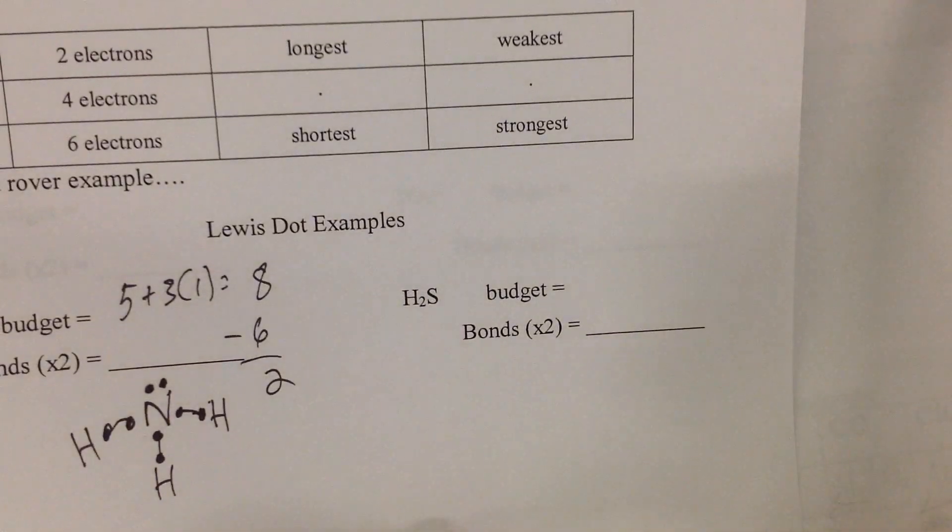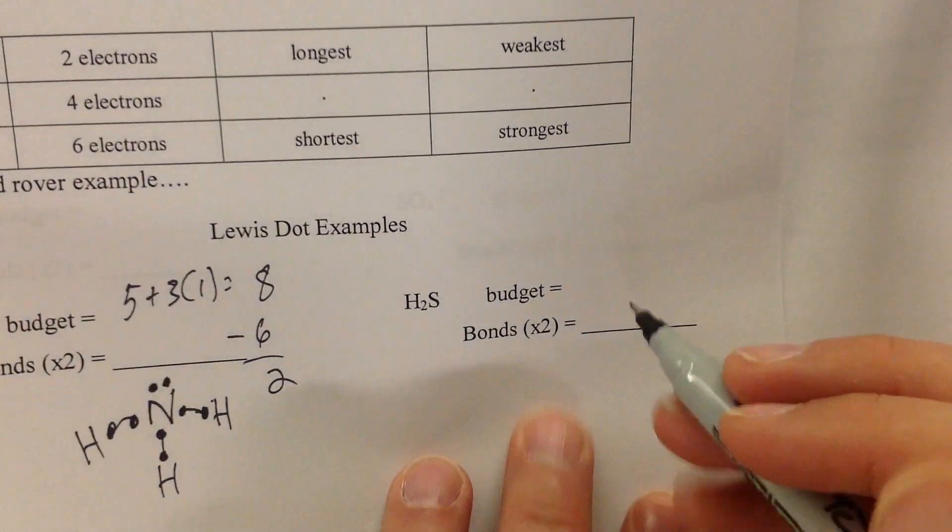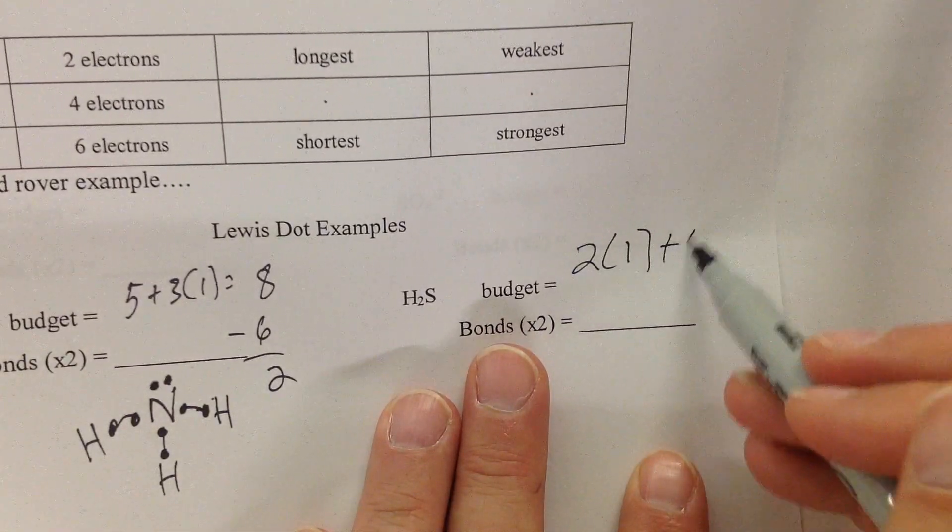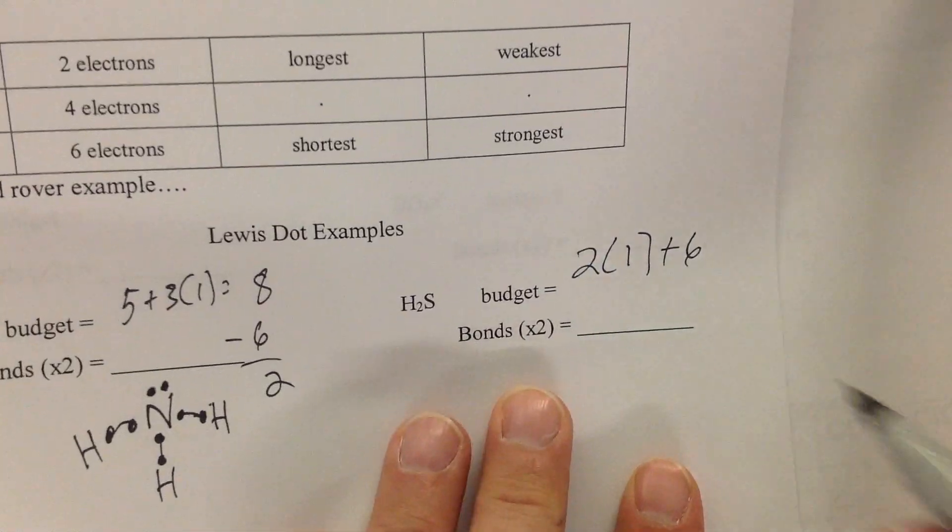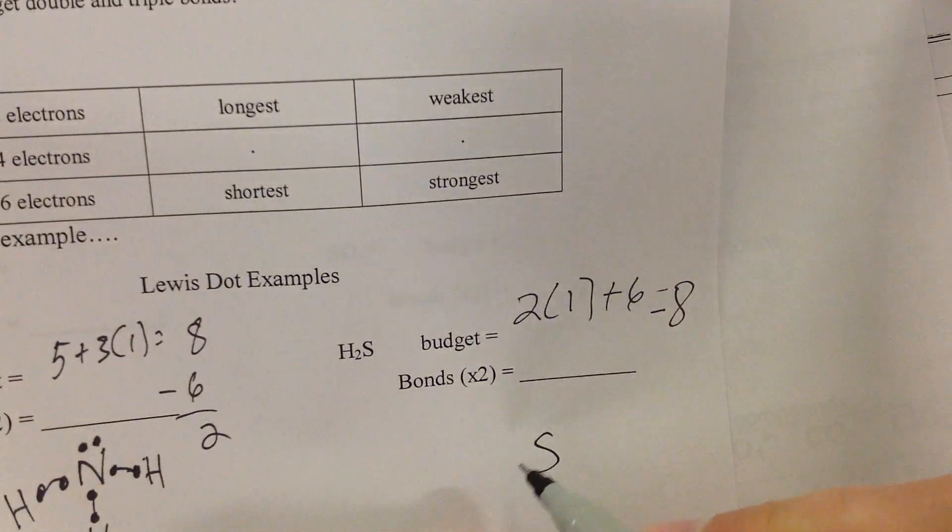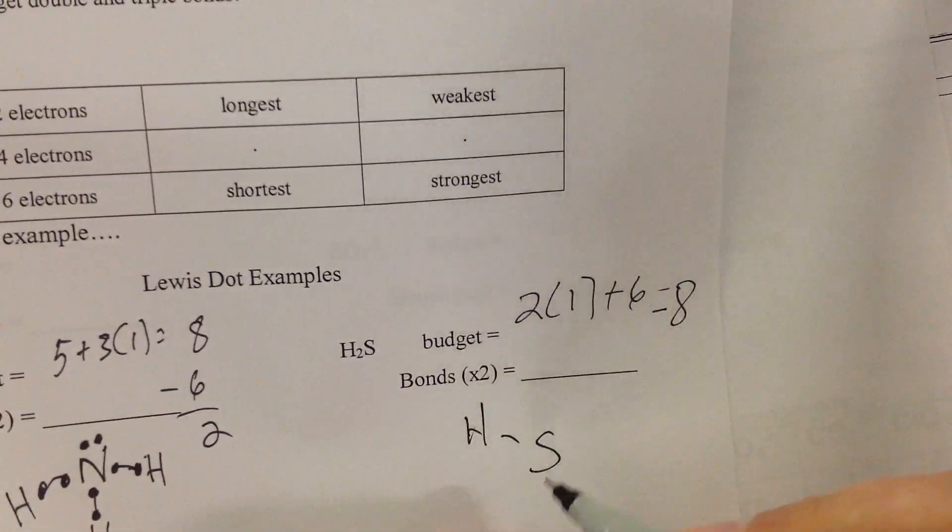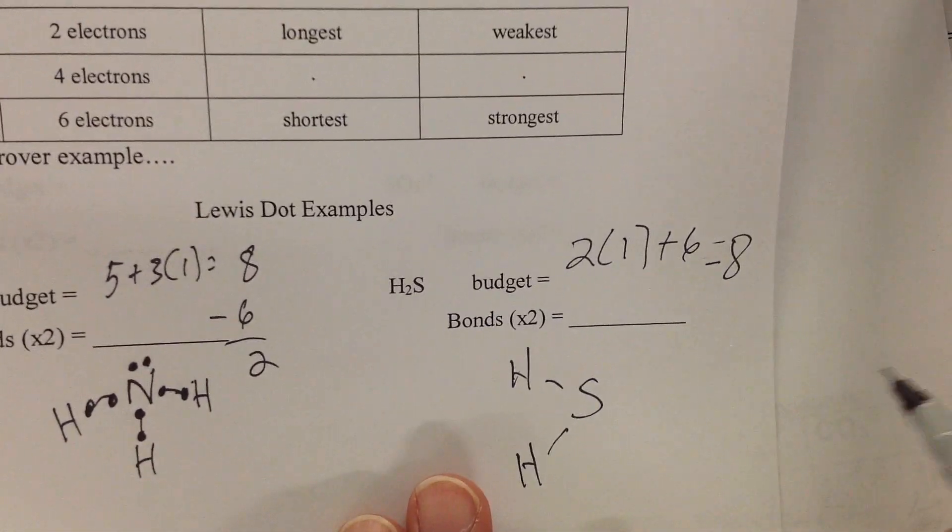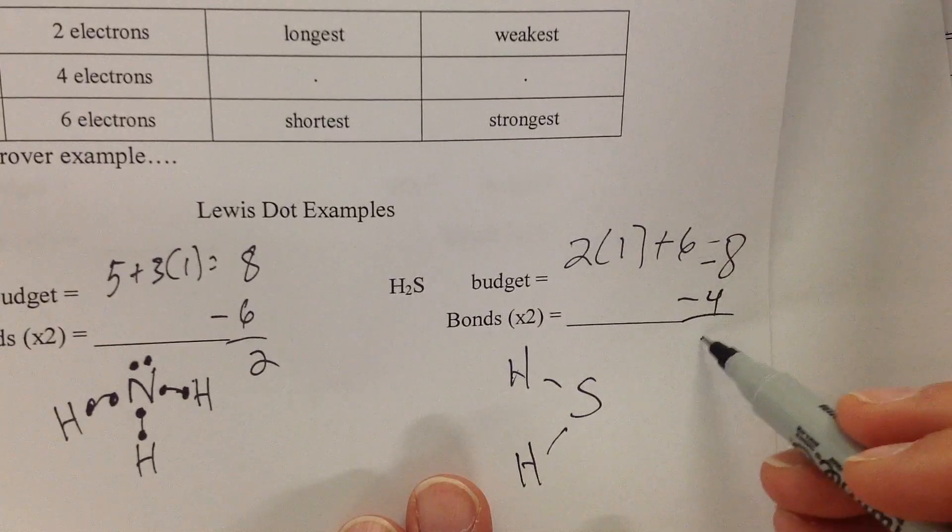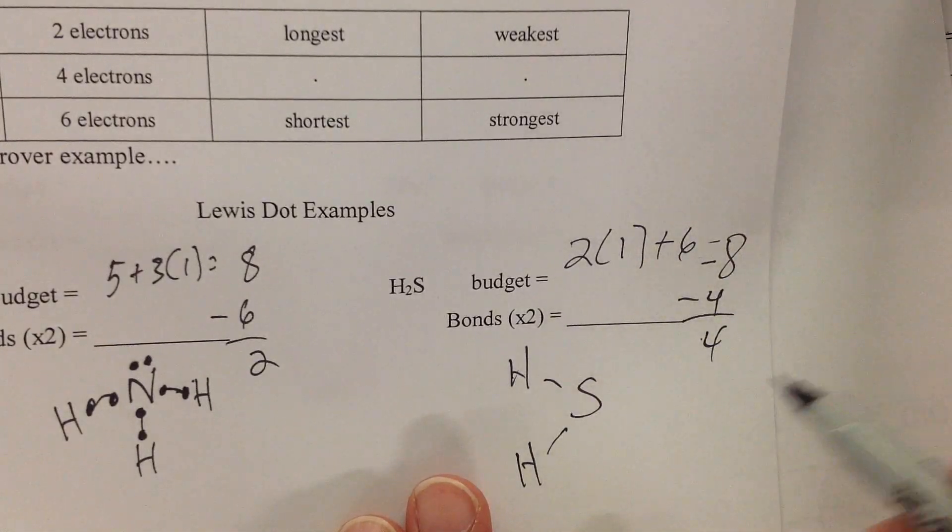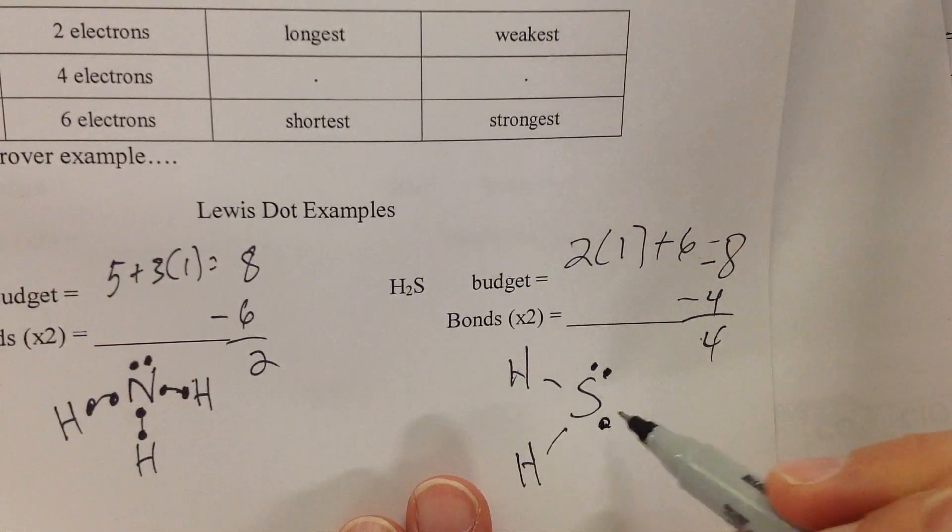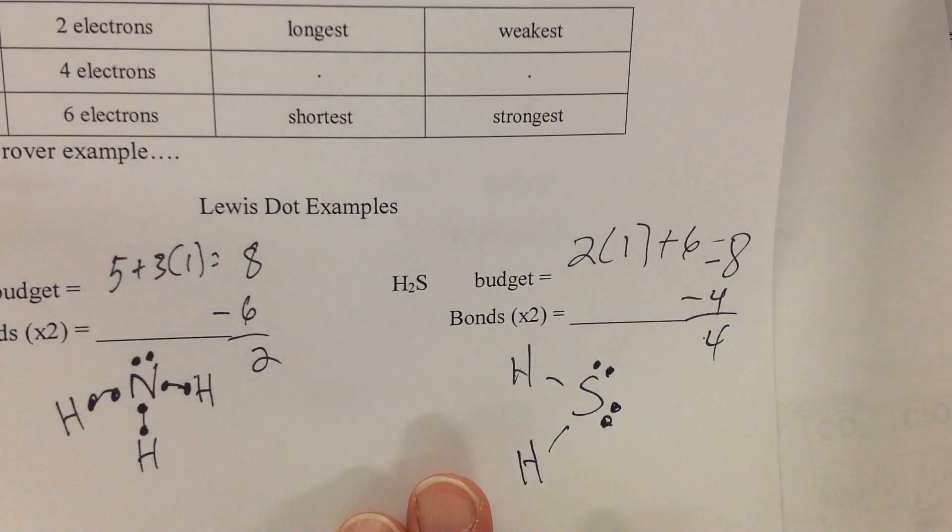Now let's look at the next substance. We've got H2S. So we look up the budget. We're going to say two times one plus six, so that is eight. Bonds, well let's draw it out first. And I'm cheating because I know it's supposed to look that way. So that would be minus four and you have four left over. Again, hydrogen doesn't need any more electrons, so you just give mama the leftover four.